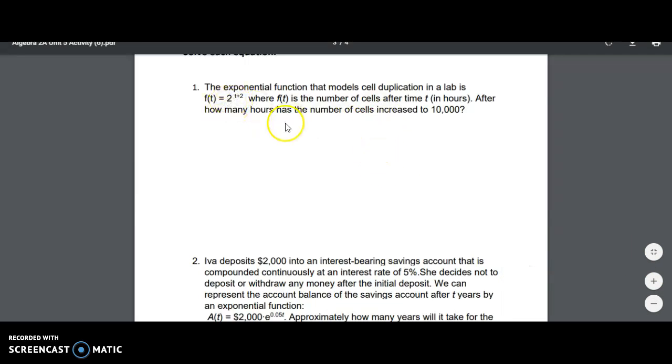So that you can have the exponent here. So we have f(t) equals 2 to the power of t plus 2, where f(t) is the number of cells after time t.